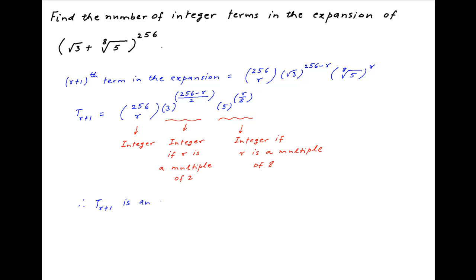Therefore, t_{r+1} is an integer if all three conditions are met. This happens when r is a multiple of 8, because in that case r is also a multiple of 2, satisfying the second condition.